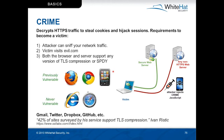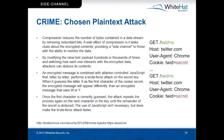On slide 76, the basics of this attack — it's a chosen plaintext attack. Compression reduces the number of bytes in the data stream by removing redundant bits. A side effect is that it leaks clues about the encrypted content and provides a side channel to those monitoring data. That leak is data length, which is very difficult to hide. By modifying the cleartext payload hundreds or thousands of times and watching how each one interacts with the encrypted data, you can start inferring information about the encrypted data. An attacker-controlled JavaScript performs a brute force attack letter by letter on a secret key.